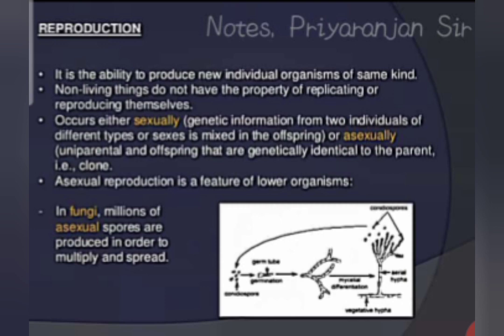Reproduction is the ability to produce new individuals or organisms. Reproduction is of two types: sexual reproduction and asexual reproduction. Asexual reproduction occurs through the vegetative parts of a plant, by producing spores, or by budding. It is uniparental — only one parent is responsible. But sexual reproduction is biparental — both male and female produce gametes which fuse during fertilization to form offspring.